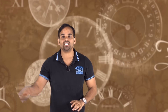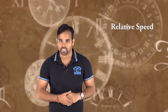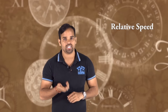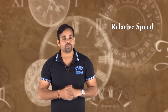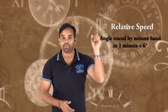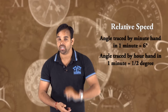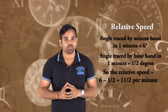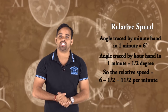So in this session we have covered basic information about the clock. Now let's look at relative speed. The minute hand moves at 6 degrees per minute, and the hour hand moves at 0.5 degrees per minute. The relative speed between the minute hand and the hour hand is 5.5 degrees per minute, and this is constant.